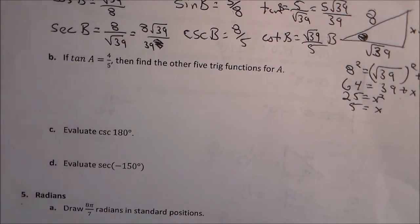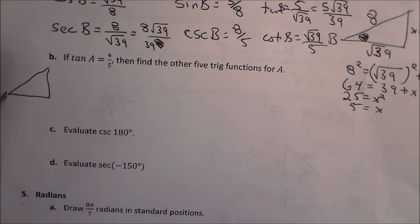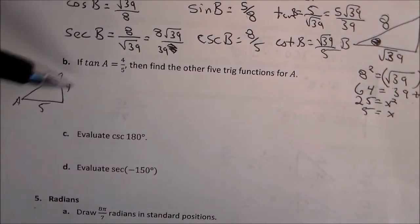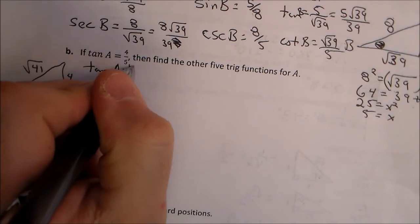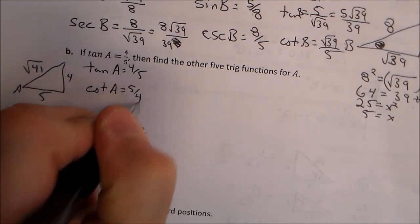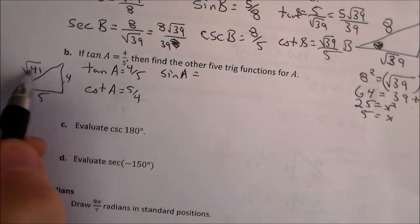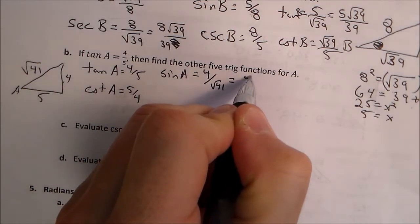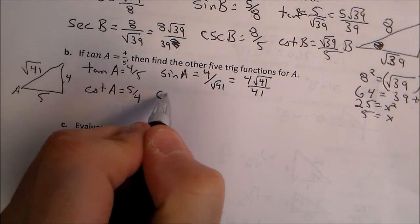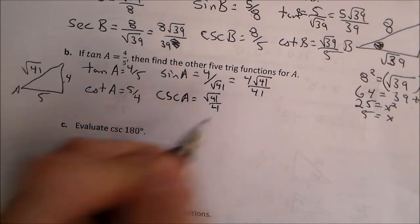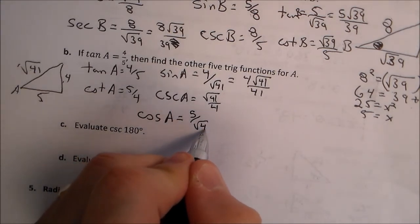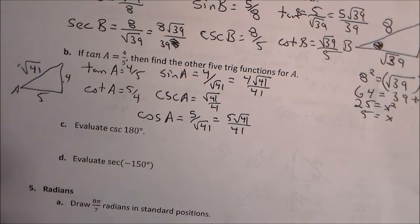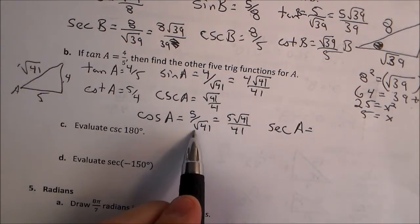For tangent of a equals 4 fifths: opposite is 4, adjacent is 5. Using the Pythagorean theorem, the hypotenuse is square root of 41. Tangent of a is 4 fifths, so cotangent of a is 5 fourths. Sine of a is 4 over root 41, which is 4 root 41 over 41. Cosecant of a is root 41 over 4. Cosine of a is adjacent over hypotenuse, or 5 over root 41, which is 5 root 41 over 41. And secant of a is its reciprocal, root 41 over 5.